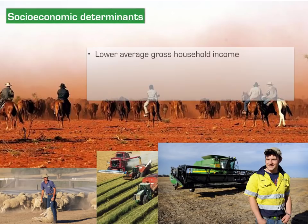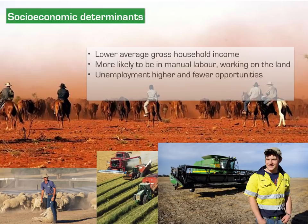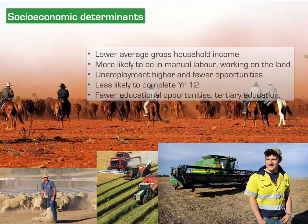Socio-economic determinants include lower average gross household income, more likely to be in manual labour such as mining and agriculture, higher unemployment and fewer opportunities, less likely to complete Year 12, and fewer educational opportunities in general, specifically tertiary education. These relate to income, employment and education, and can all impact on the health of people in rural and remote communities.